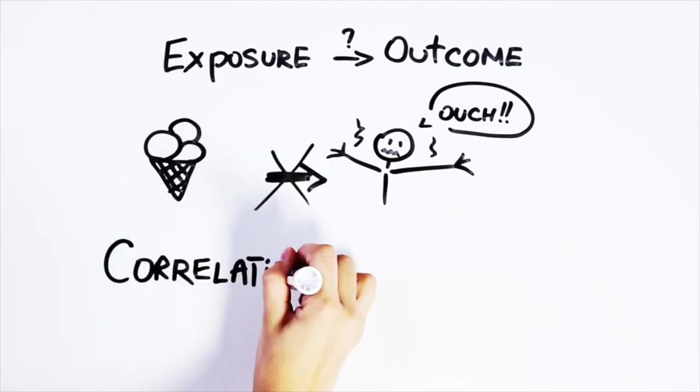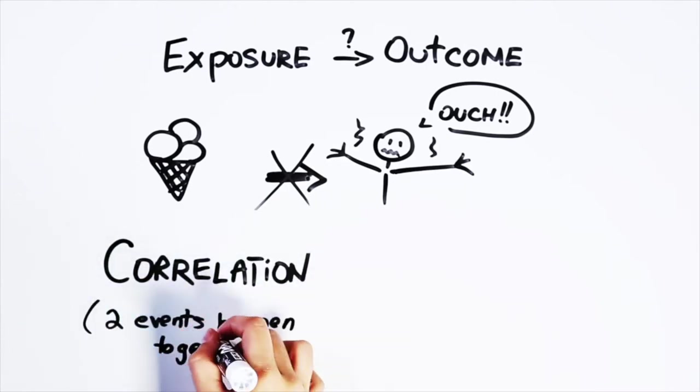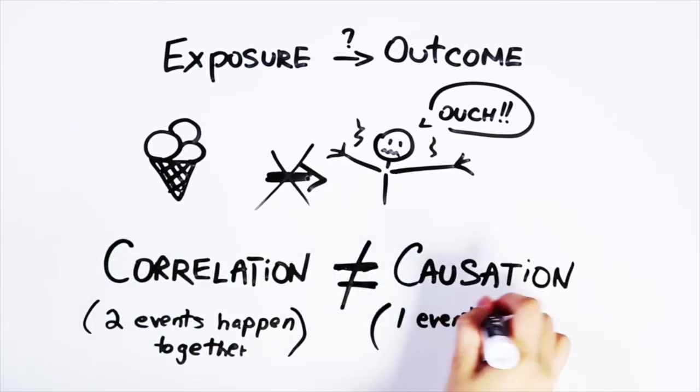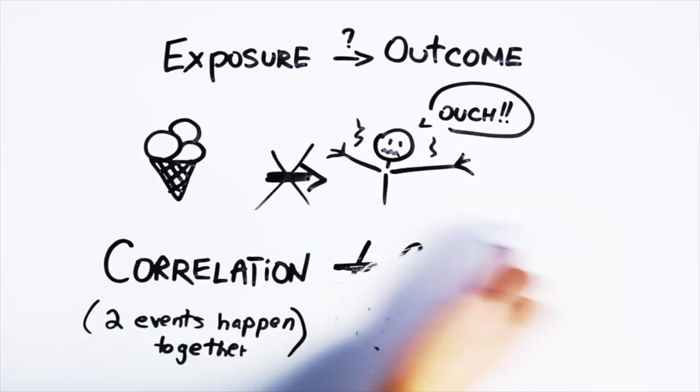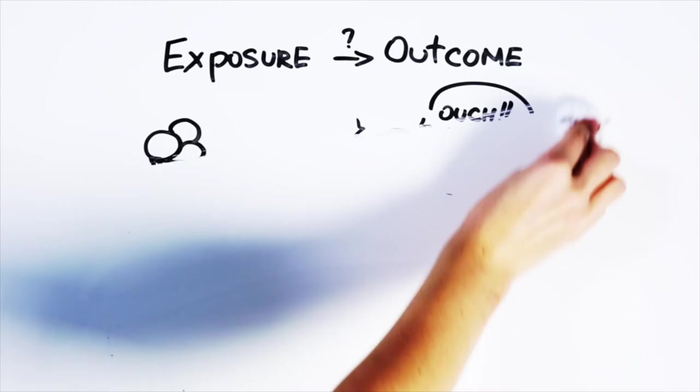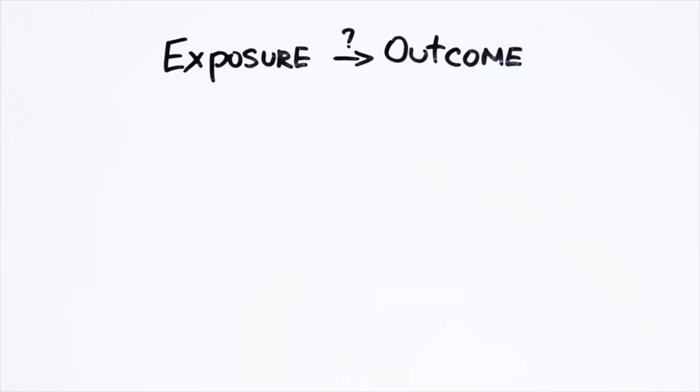These events are instead correlated, meaning they often happen together. But they're not causative, meaning that eating ice cream doesn't directly cause sunburn. And while this example is pretty obvious, making sense of epidemiology data is often really hard, and care needs to be taken that we don't jump to the wrong conclusions.